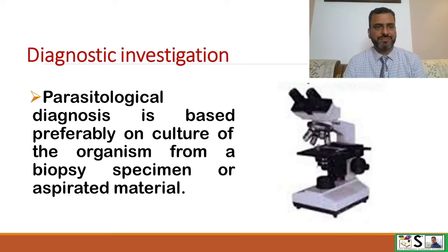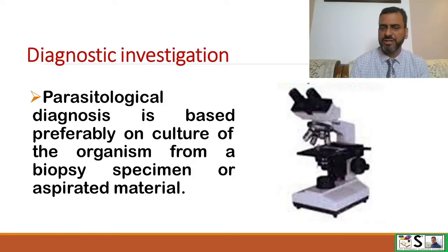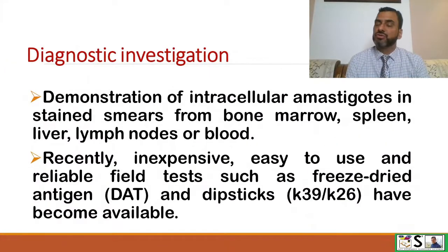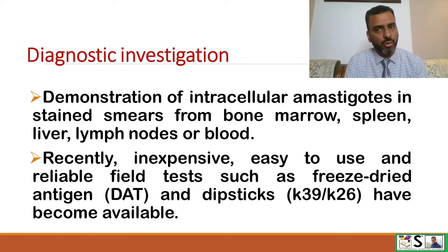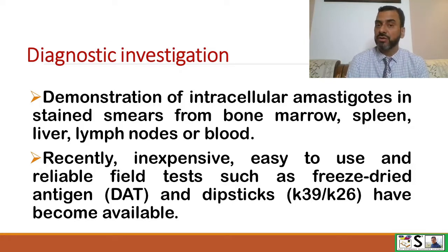Diagnostic investigations: Parasitological diagnosis is based on the culture of the organism from biopsy or aspirated specimen material. Demonstration of intracellular amastigotes in stained smears from the bone marrow, spleen, liver, lymph nodes, or blood is also used. Recently, inexpensive, easy-to-use, and reliable field tests such as freeze-dried antigen and dipstick rapid tests are also available.